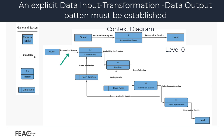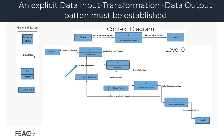In our example, for instance, we see that the reservation request is an input to process 1.0 'check availability' and is transformed into an output, 'availability confirmation.' The inputs and outputs are nouns; the process is a verb-noun statement. Furthermore, the room inventory datastore provides an additional output flow of room availability, which is also an input to the process. We can also see in process 3.0 'confirm room selection' there are two outputs: room selection confirmation is an input to process 4.0, while the other output, room availability update, is an input flow to the room inventory datastore and serves to reflect a change to the data in that store.